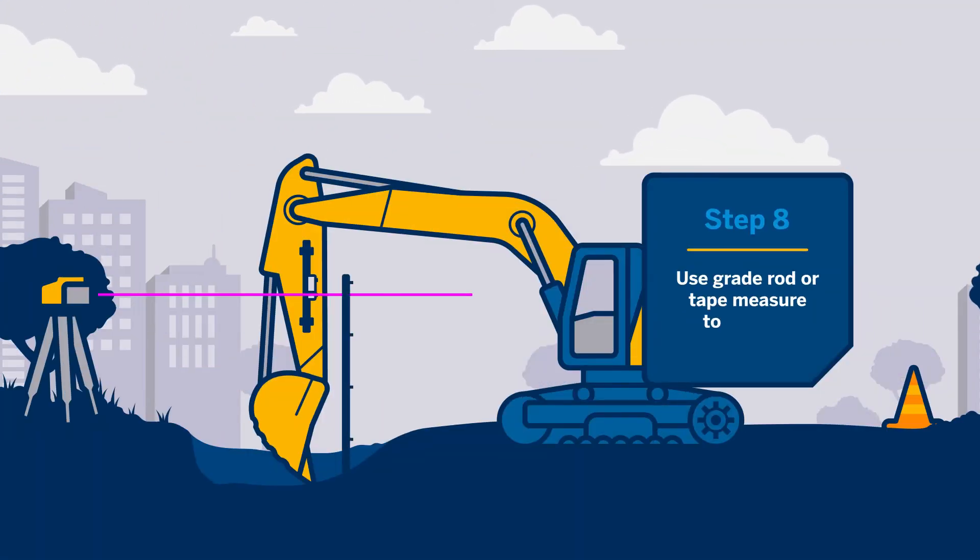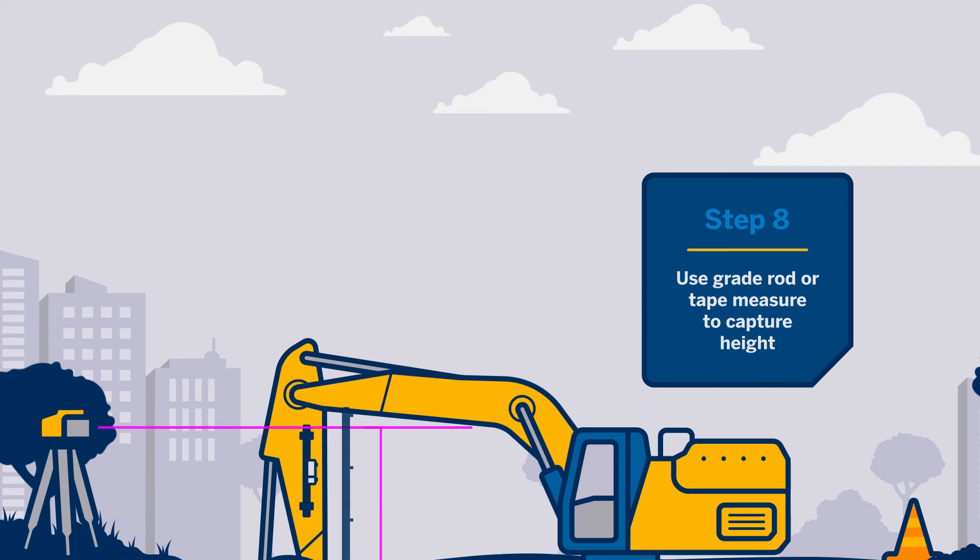Safely measure the distance from the bucket teeth to the center on-grade mark on the back of the receiver using the provided tape measure or a grade mark. This may be done in or out of the trench. This is the setup length.